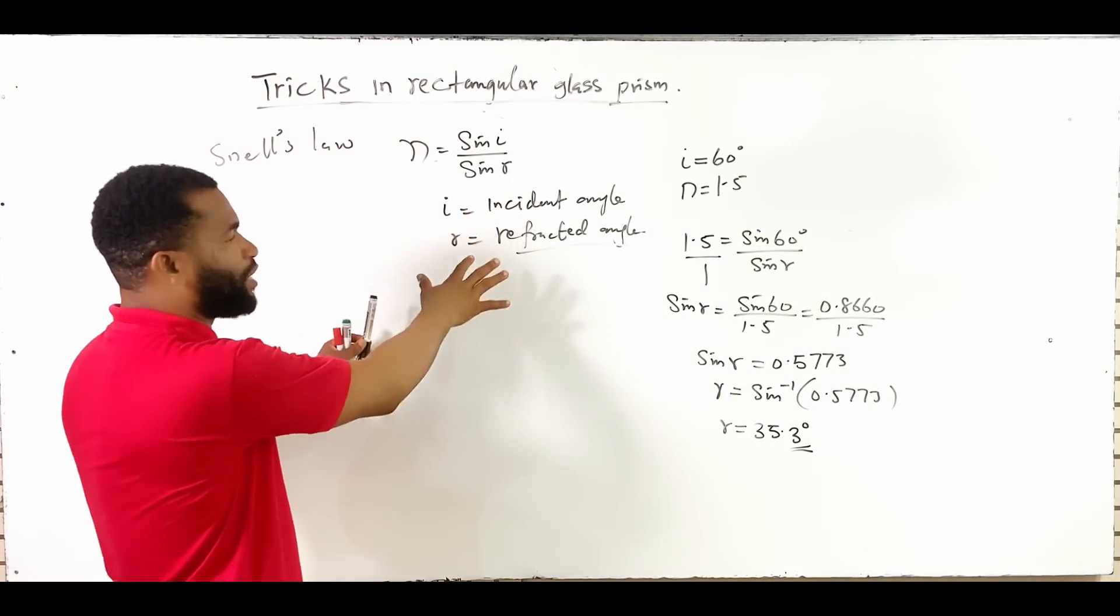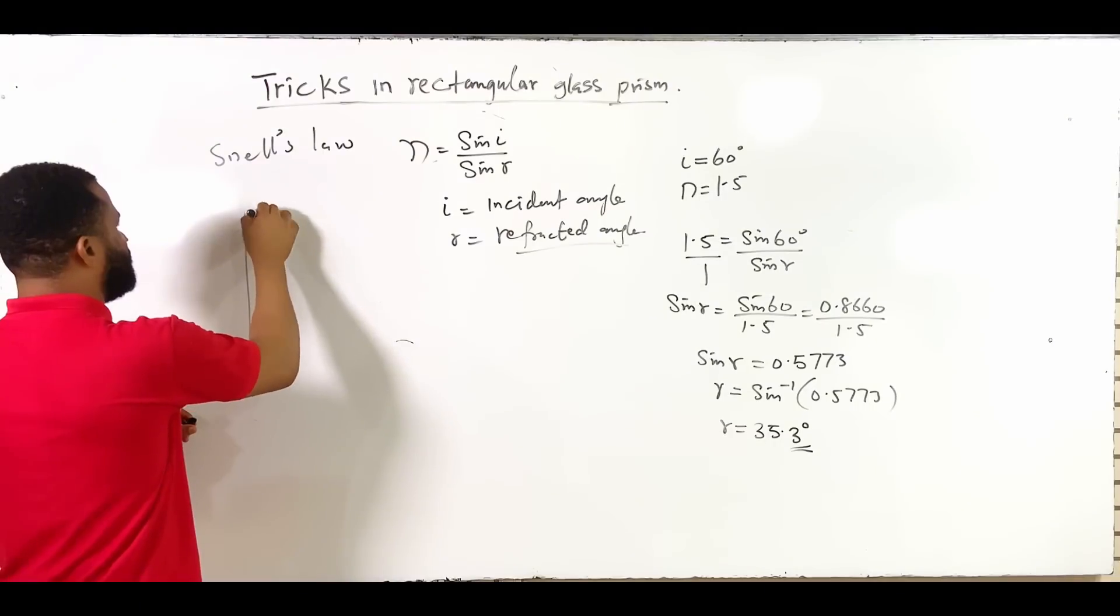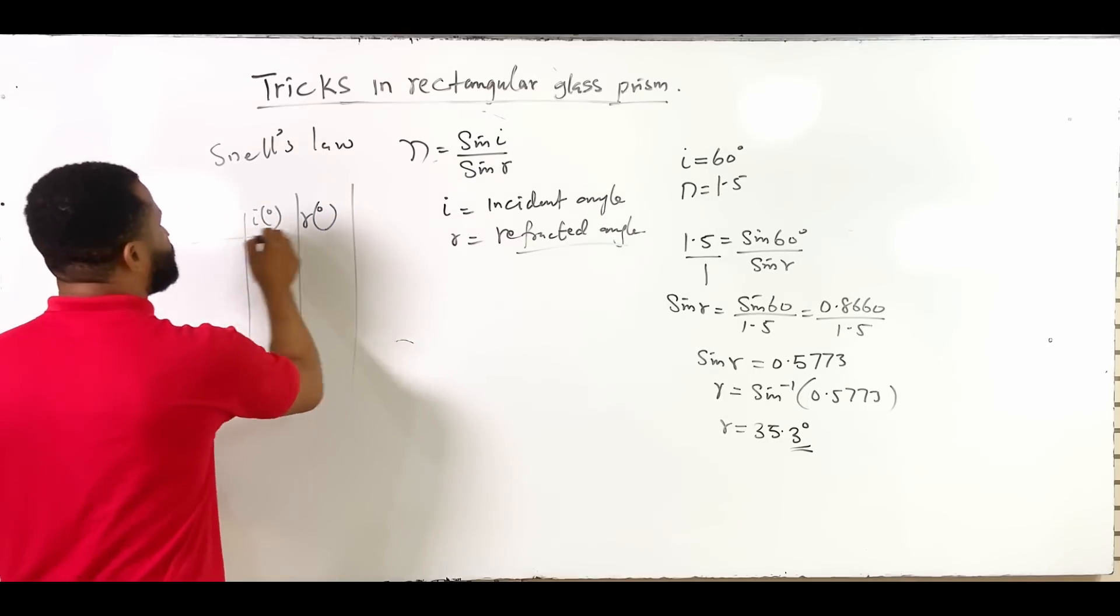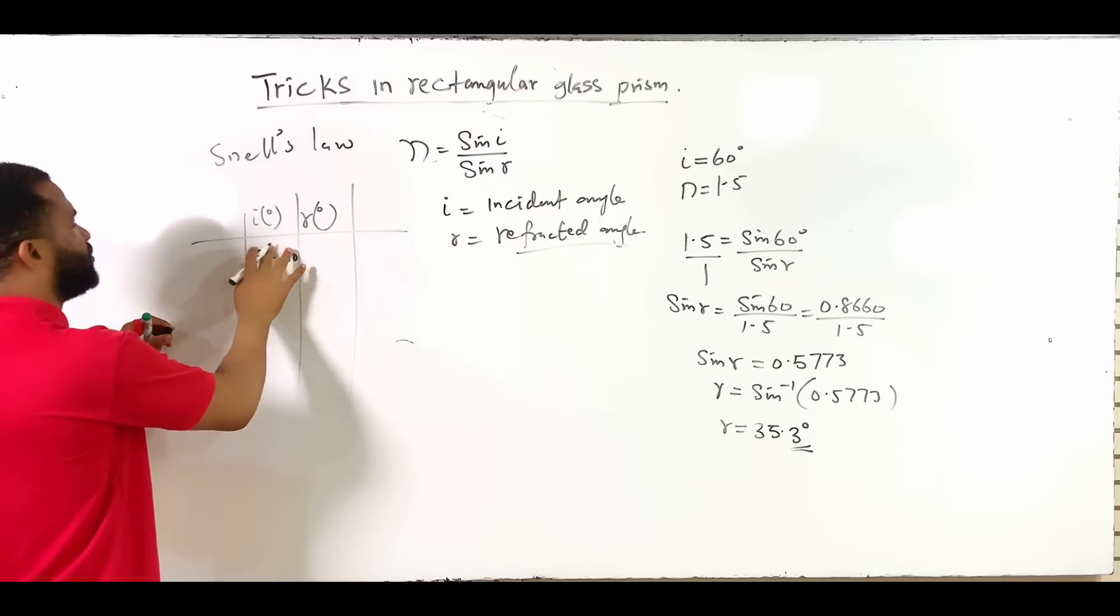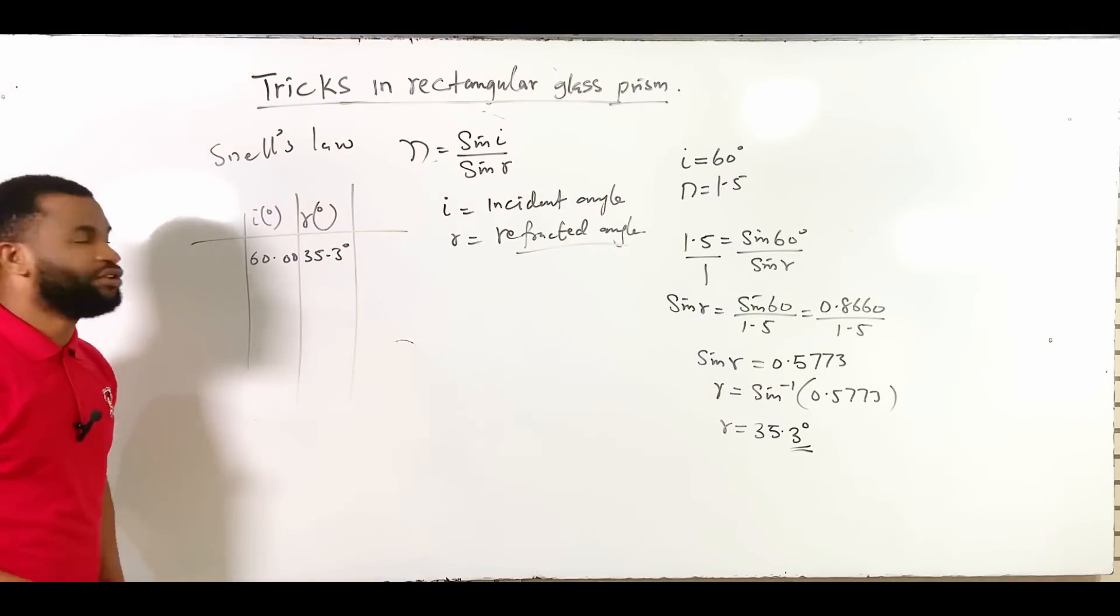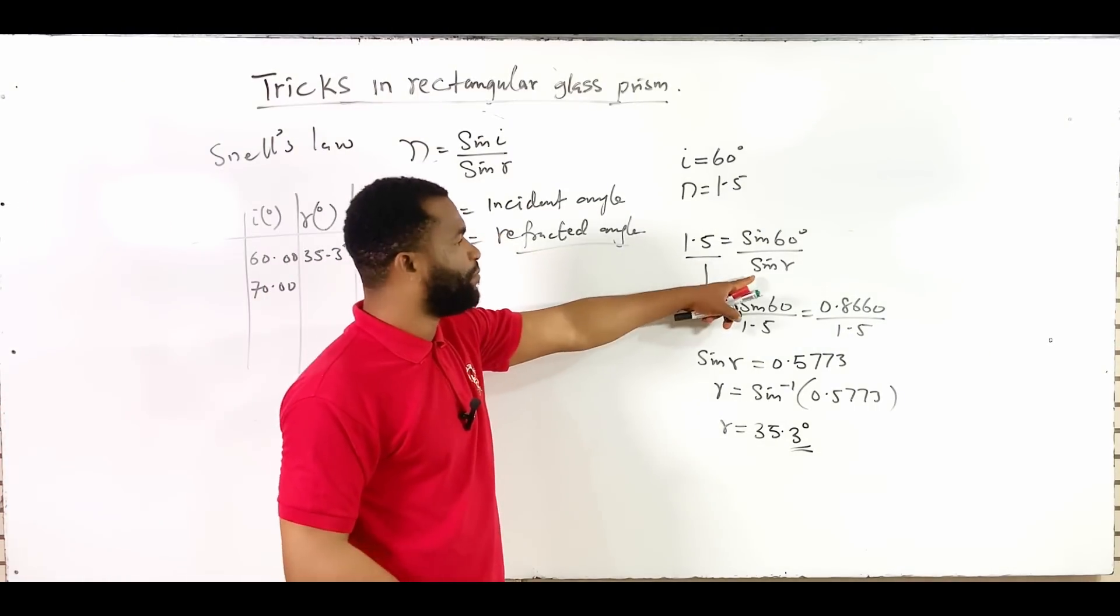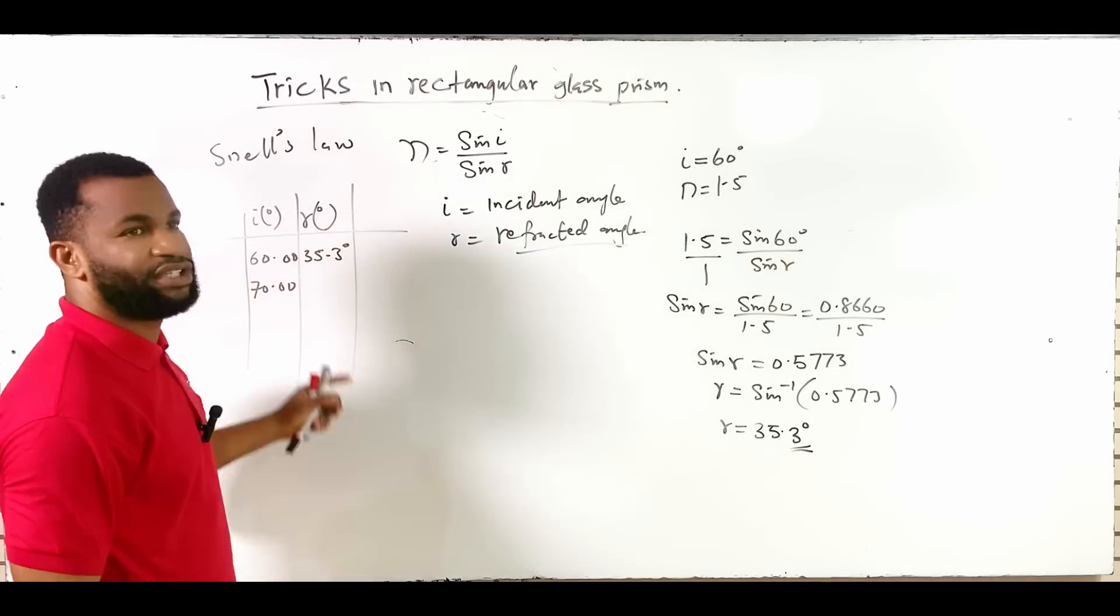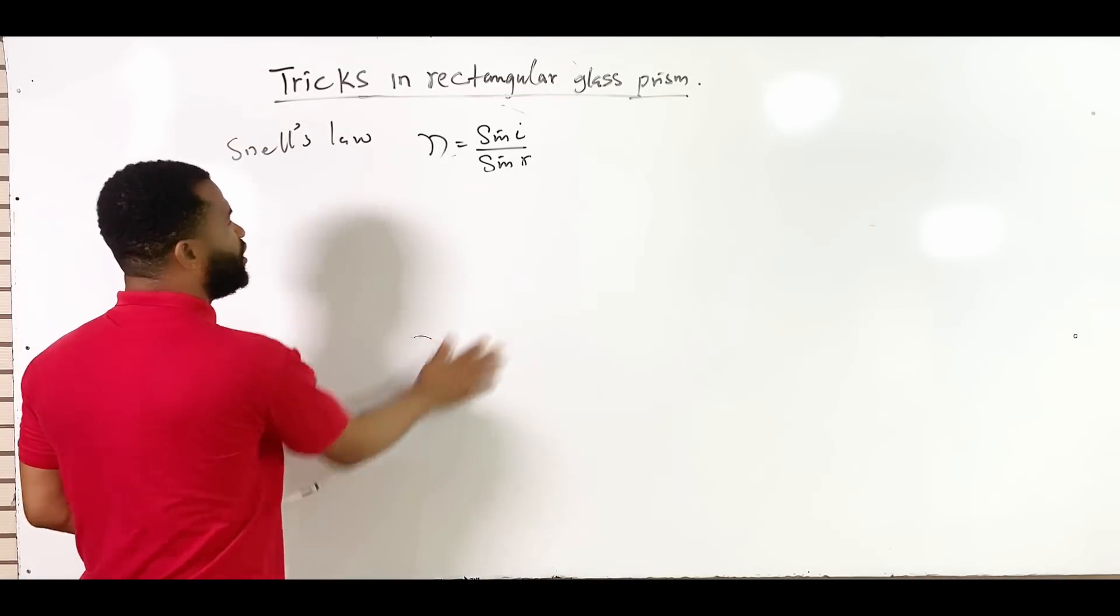Therefore, in a rectangular glass prism, if you are asked to record I in degrees and record R in degrees, you can say that under 60.00, R is going to be 35.30. So if they say use I to be 70, you can also put it here, make R the subject of the formula to find your corresponding refracted ray. But that is, by the way, there is one important thing I want to show you.